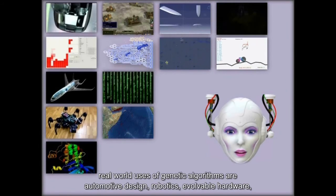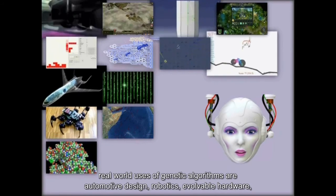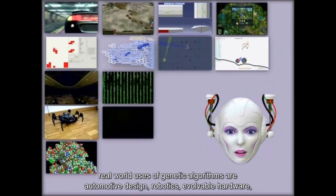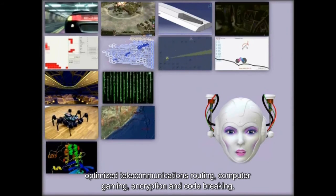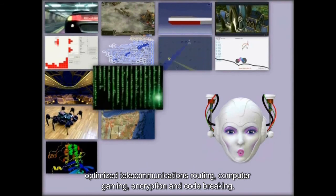Some real-world uses of genetic algorithms: automotive design, robotics, evolvable hardware, optimized telecommunications routing, computer gaming, encryption and code breaking.